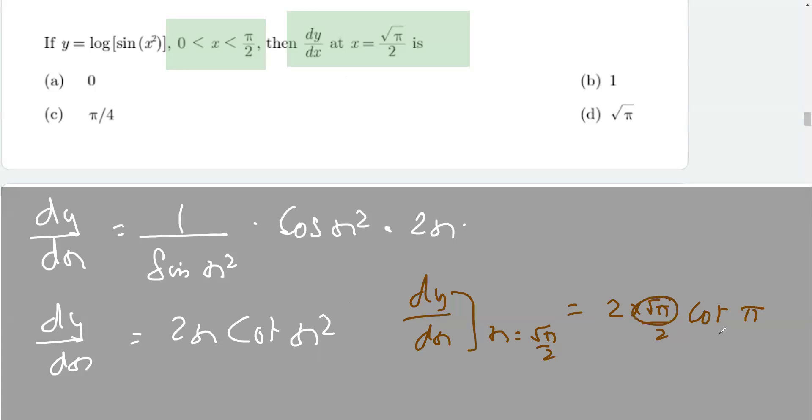Square root of pi by 2 squared will give us pi by 2. So we have cot of pi by 2, which when squared in the denominator is 4.